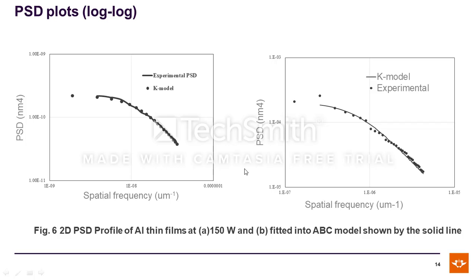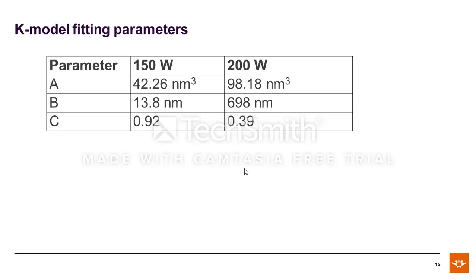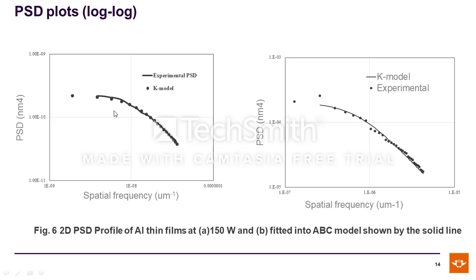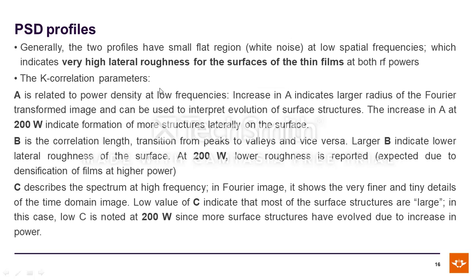We obtained the values of the unknowns A, B, and C from the k-correlation model at 150 and 200 watts. We can see that A is higher at 200 watts, B is also higher at 200 watts, and C reduces at higher RF power. The two profiles have a small flat region at low spatial frequency, which indicates very high lateral roughness for the thin film surfaces at both RF powers.